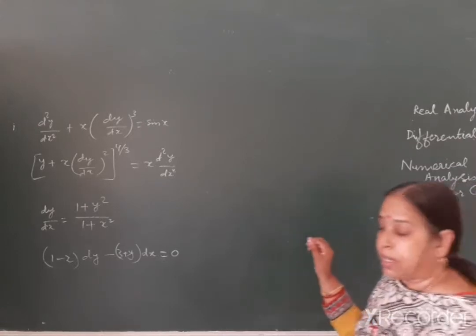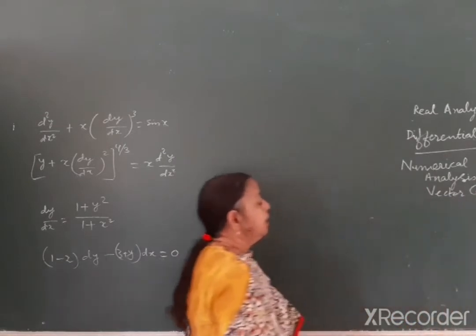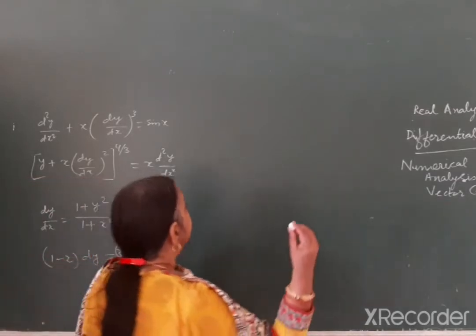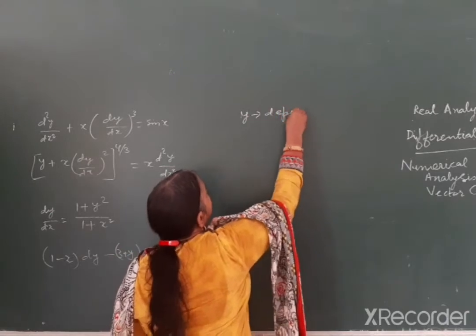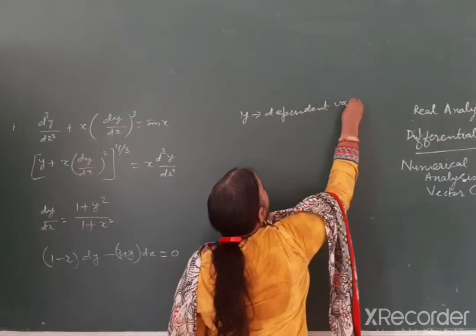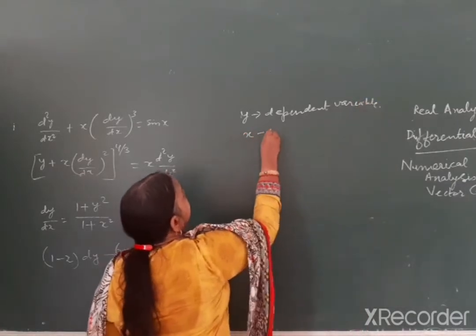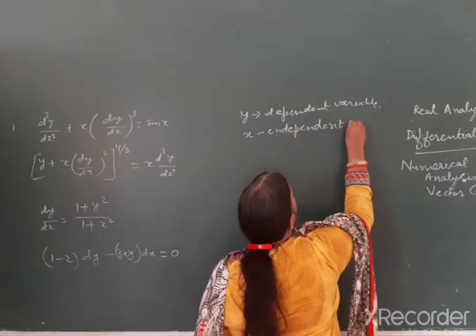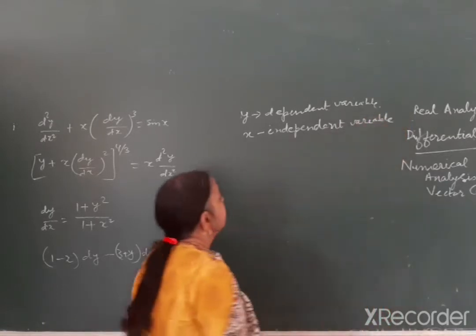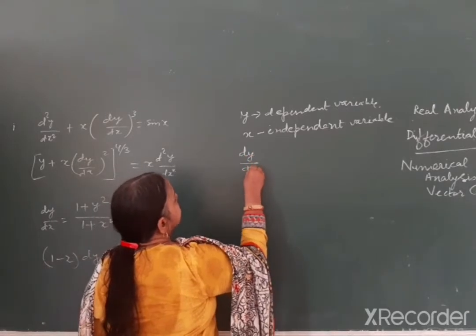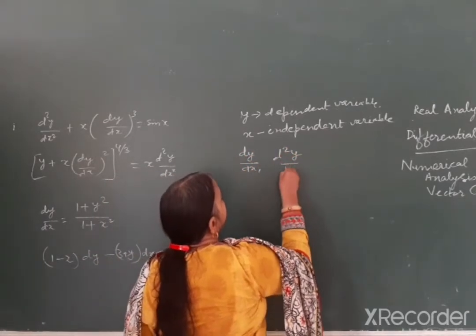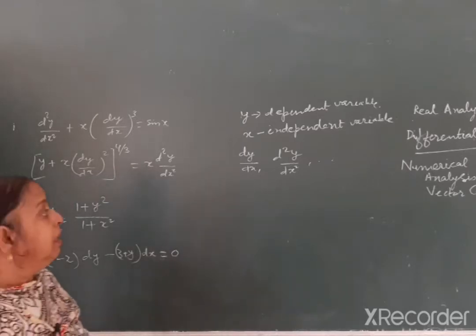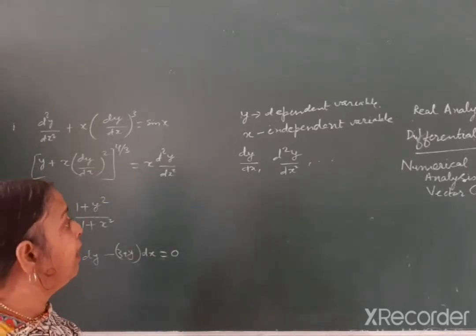Second paper is called Differential Equations. Differential Equations - jaise naam se hi aapko pata hai ki ismein derivatives involved hote hain, jaise ki y aapka dependent variable, x independent variable, aur inke derivatives jaise ki dy by dx, d²y by dx² - yani wo equations jinke andar dependent variable, independent variable, aur unke derivatives involve hon, wo kehlaate hain Differential Equations.